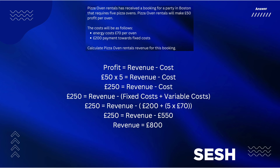Add the variable costs of £350 onto the fixed costs of £200 to get total costs of £550. Then rearranging the numbers — add £550 onto that profit of £250 — and that gives you revenue of £800.